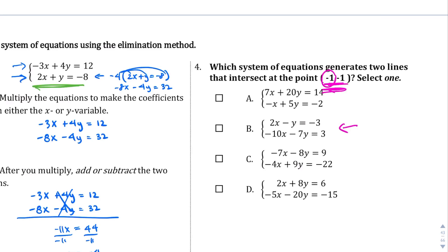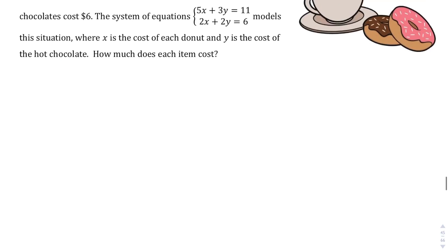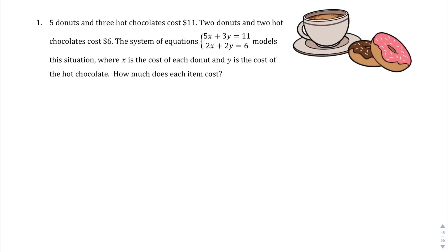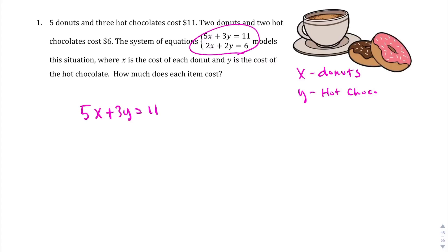Let's move on to the next page — page 45. We have a context problem here: 5 donuts and 3 hot chocolates cost $11, and 2 donuts and 2 hot chocolates cost $6. We come up with this system of equations. So x is the donuts and y are the hot chocolates. So that's 5x plus 3y equals 11, and 2x plus 2y equals 6.